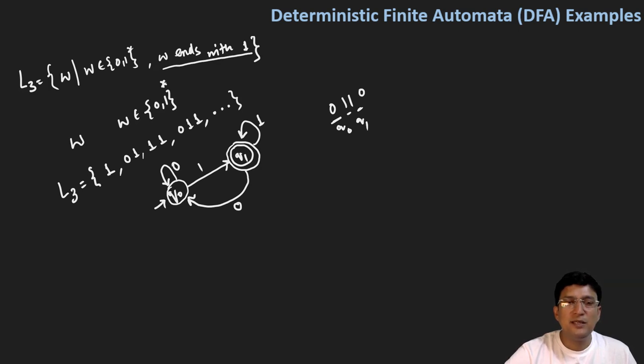So we have q1 to non-final state move on getting a symbol 0 because my string should end with one.